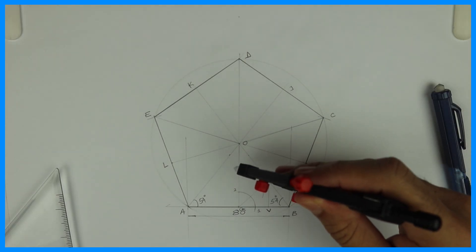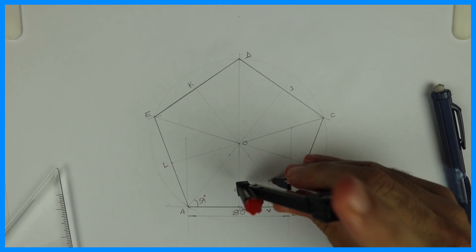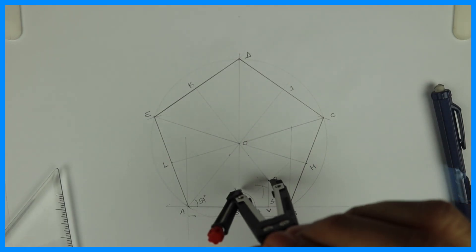Now take P to V and draw a circle, which will touch two sides of the pentagon.